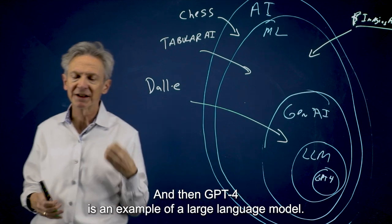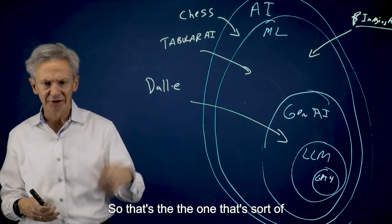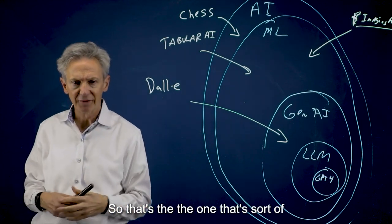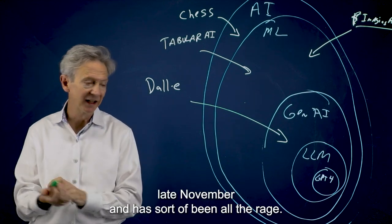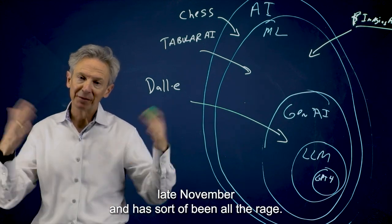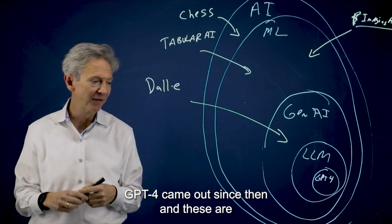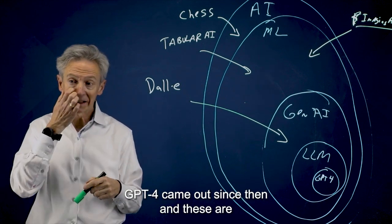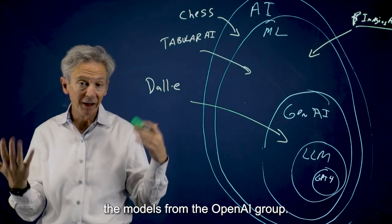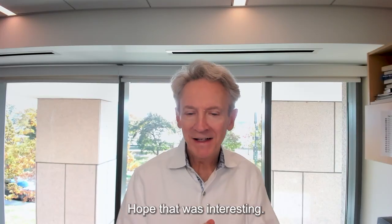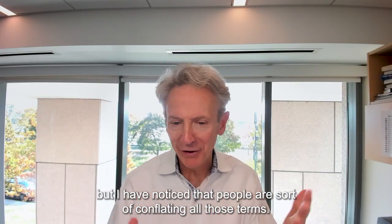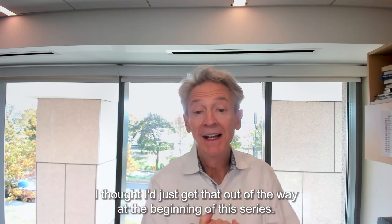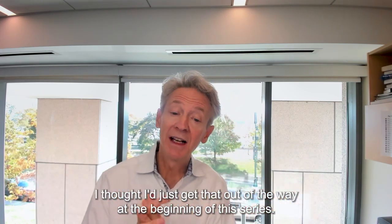And then GPT-4 is an example of a large language model. So that's the one that, well, GPT-3.5 kind of hit the street last late November, and it's been all the rage. GPT-4 came out since then. And these are the models from the OpenAI group. Okay, hope that was interesting, not too basic. But I have noticed that people are conflating all those terms. So I thought I'd just get that out of the way at the beginning of this series.